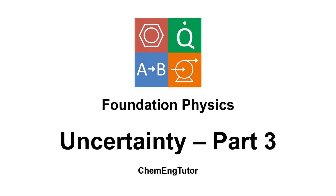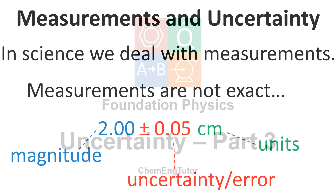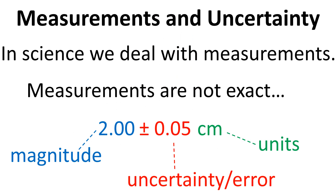In this video I'm going to talk about uncertainty with a specific focus on estimating uncertainty in measurements. We've established in the previous video that when you have a measurement you need certain bits of information: the magnitude, an error or uncertainty, and the units. That's because measurements are inexact, and so without these three bits of information a measurement is not really very useful.